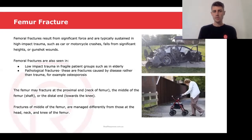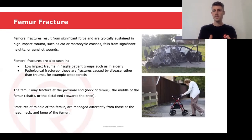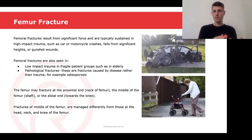It also occurs as a pathological fracture — a fracture that results from a disease rather than from trauma. An example of this might be something like osteoporosis, which weakens the bones. The femur may fracture in many different places: it may fracture at the proximal end or the neck of femur, it could fracture in the middle which would be the shaft, or it could fracture at the distal end which is towards the knee.